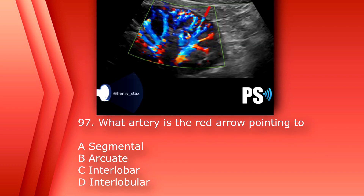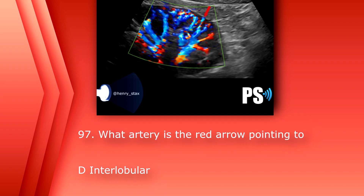Number 97: what artery is the red arrow pointing to? A. Segmental. B. Arcuate. C. Interlobar. Or D. Interlobular. The answer is D. Interlobular.